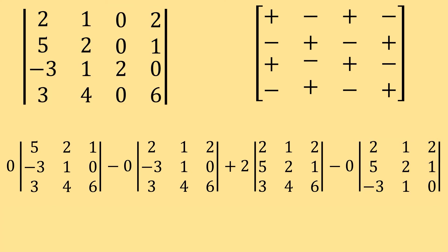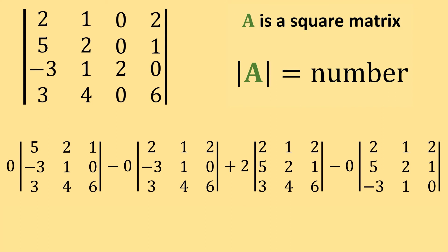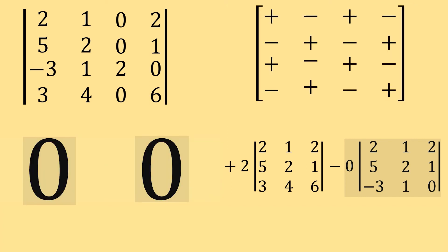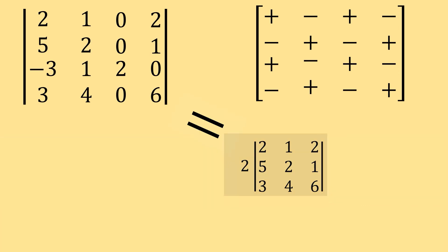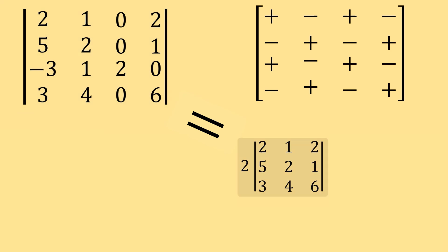It's important to note that when you're taking the determinant of something, your result is just going to be a number. So three of these terms are zero times the determinant of something — and when you multiply something by zero, you're just left with zero. So we can replace those three values with zero, and all we're left with is 2 times this 3x3 determinant. We've reduced the size of the determinant we're working with. The determinant of our 4x4 matrix is actually just equal to 2 times the determinant of the 3x3 matrix with values 2, 1, 2, 5, 2, 1, 3, 4, 6.